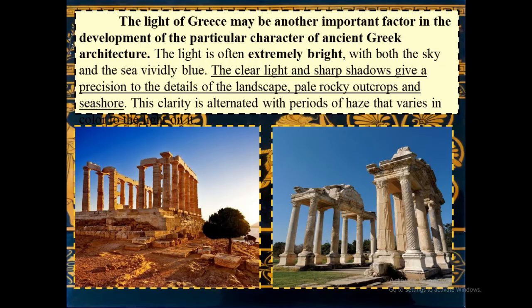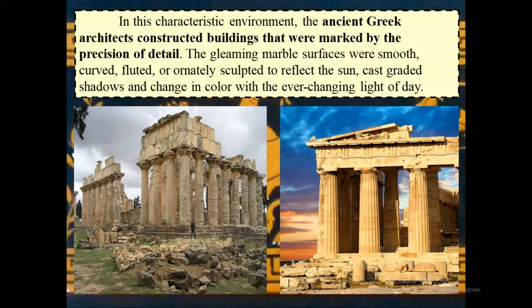The light of Greece may be another important factor in the development of the particular character of ancient Greek architecture. The light is often extremely bright, with both the sky and the sea vividly blue. The clear light and sharp shadows give a precision to the details of the landscape, pale rocky outcrops, and seashore. This clarity is alternated with periods of haze that varies in color. In this characteristic environment, the ancient Greek architects constructed buildings marked by precision of detail. The gleaming marble surfaces were smooth, curved, fluted, or ornately sculpted to reflect the sun, cast graded shadows, and change in color with the ever-changing light of day.